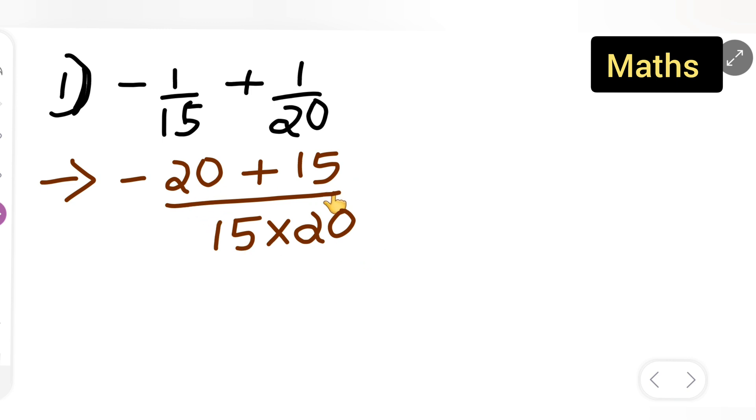What I will have to do is 20 plus 15 will give you what? Minus 20 plus 15 will give you, you will get minus 5, minus 5 upon 15 multiplied by 20.